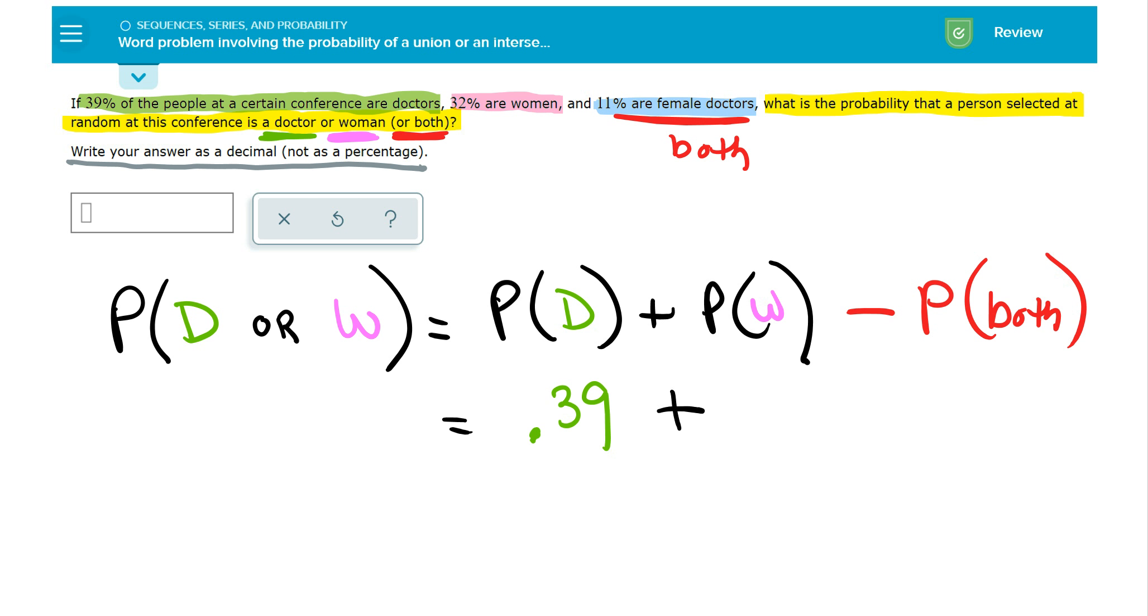And then the probability of a woman, it's 32% are women, so 0.32.